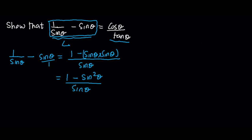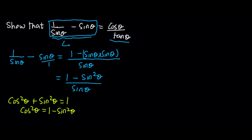Now, from the trig identities, cos squared theta plus sin squared theta is equal to 1. Hence, cos squared theta is 1 minus sin squared theta. So, what it means is that the 1 minus sin squared theta here is the same as cos squared theta, and I'm going to replace that with cos squared theta.